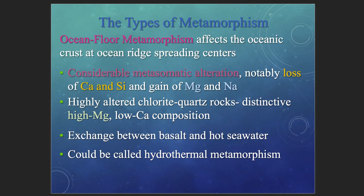Ocean floor metamorphism affects the oceanic crust through fluids leading to a loss of calcium and silica and addition of magnesium and sodium — commonly called metasomatic alteration. The result is highly altered chlorite-quartz-rich rocks distinctive of magnesium concentration and low calcium composition. This is an exchange reaction between basalts and seawater warmed by the thermal anomaly of a relatively shallow mantle — a form of hydrothermal metamorphism.